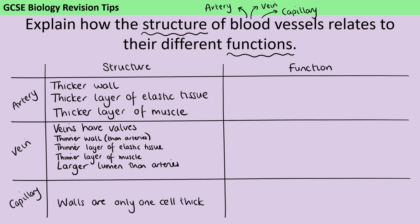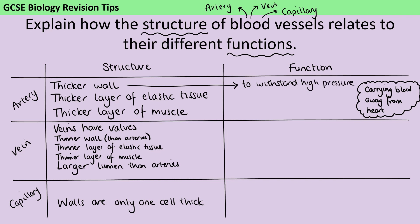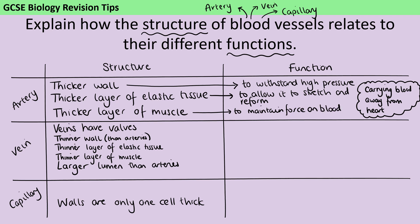So far I've discussed all three types of blood vessel and talked about the structure of each. Now I need to talk about their function and ideally link these together. The key thing about arteries is that they carry blood away from the heart, and blood moving away from the heart is under high pressure. So we have a thicker wall in order to withstand that high pressure, and we need lots of elastic tissue to allow the artery to stretch out of shape and then reform. That thicker layer of muscle also allows the artery to maintain that pressure and force acting on the blood.